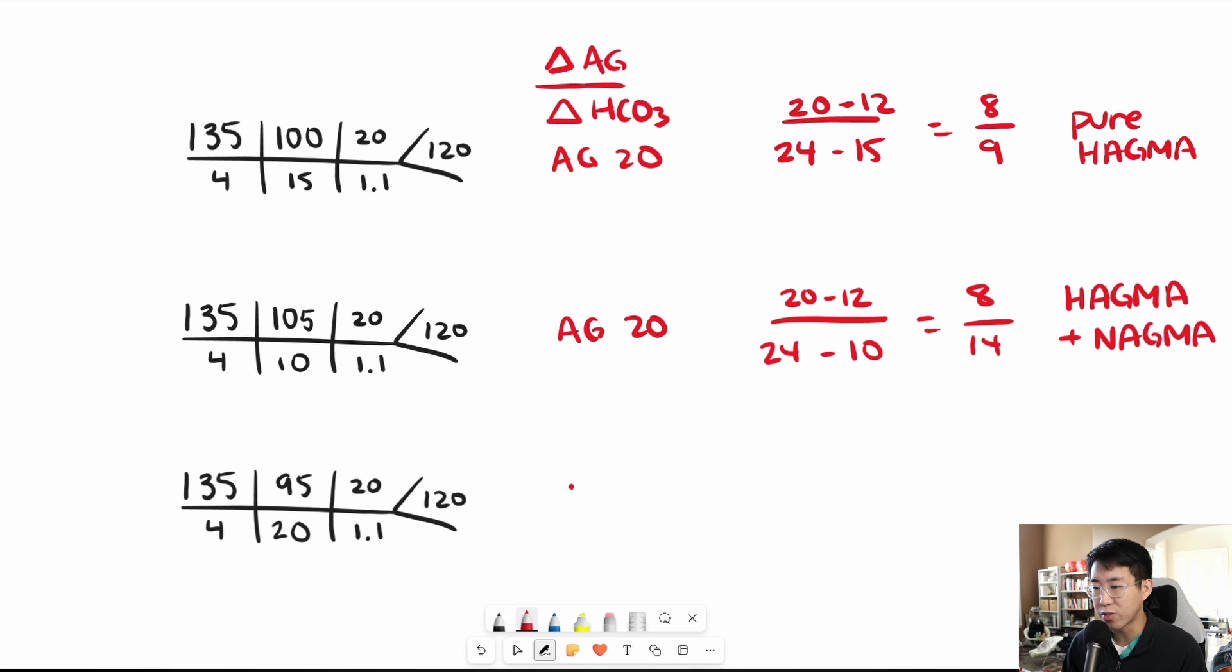And then finally for this final example, if you calculate the anion gap again it is 20, so we do 20 minus 12. But in this case the patient has a bicarb of 20, so we do 24 minus 20 and we get 8 over 4, which equals 2. So this is telling us that there is a high anion gap metabolic acidosis as well as a metabolic alkalosis.